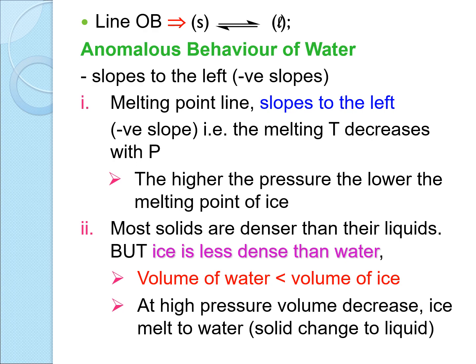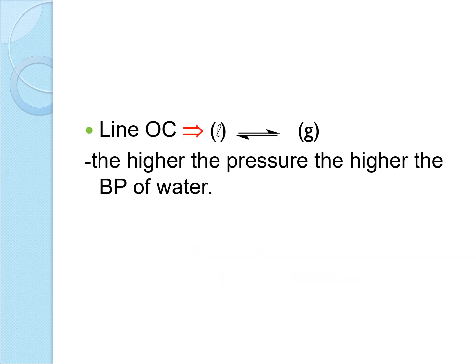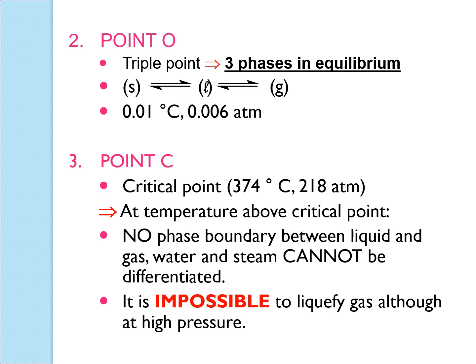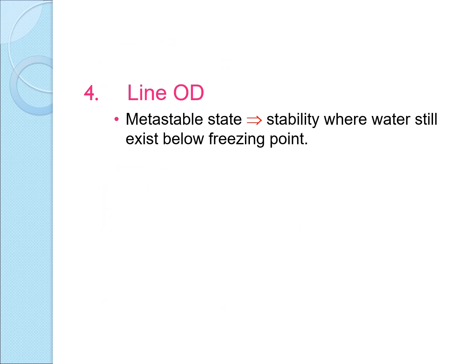At high pressure, volume decreases and ice melts to water — solid changes to liquid. Line OC is normal for water. The triple point O for water is 0.01 degrees Celsius at 0.006 atm, and the critical point C is 374 degrees Celsius at 218 atm. There is also another line OD, which is a metastable state where the stability of water still exists below the freezing point.